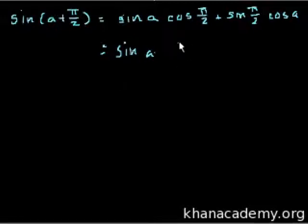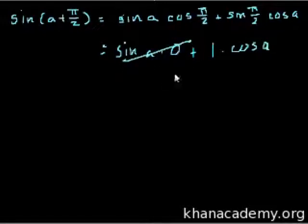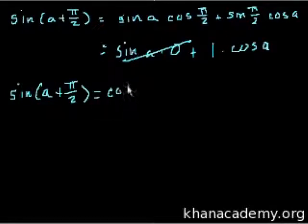So this becomes zero. Plus sine pi over 2 times cosine a. Sine of pi over 2 - on the unit circle, sine of pi over 2 is one. So we get one times cosine a, which equals cosine a. This trigonometric identity shows that sine of a plus pi over 2 equals cosine a.